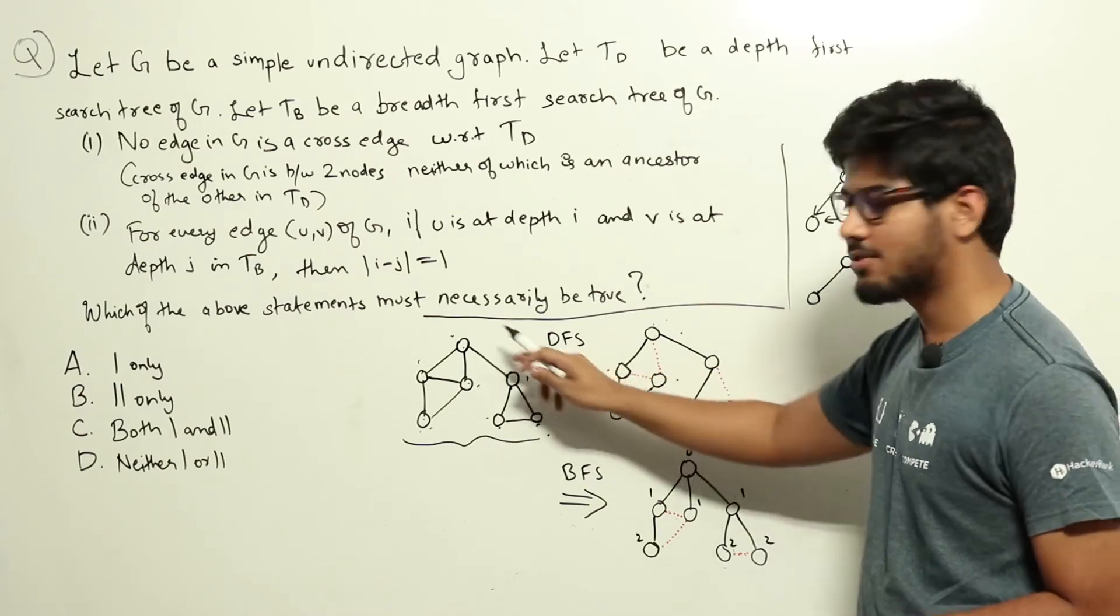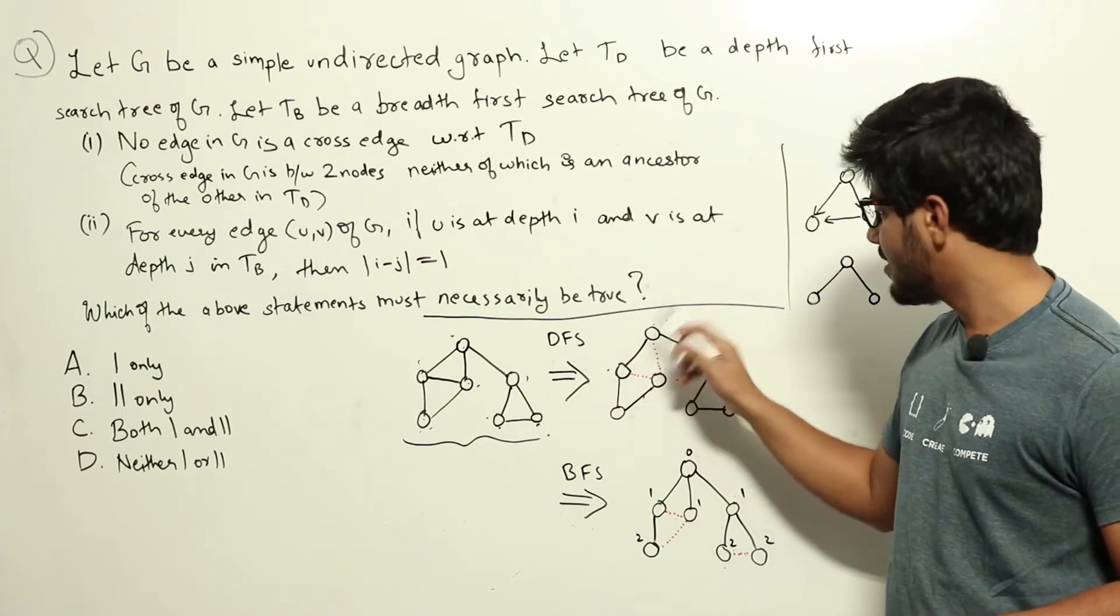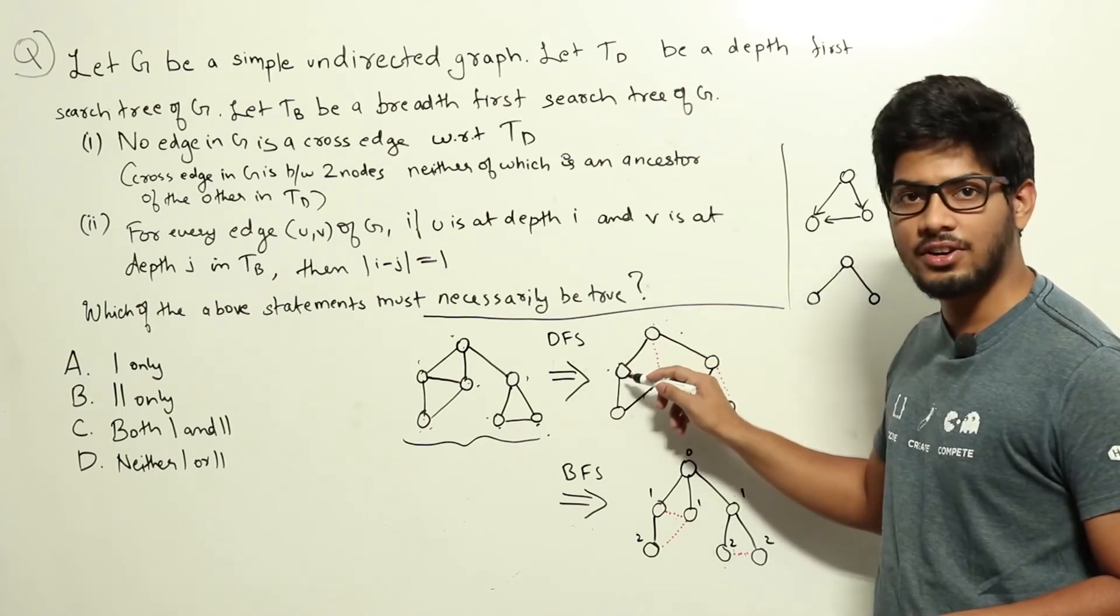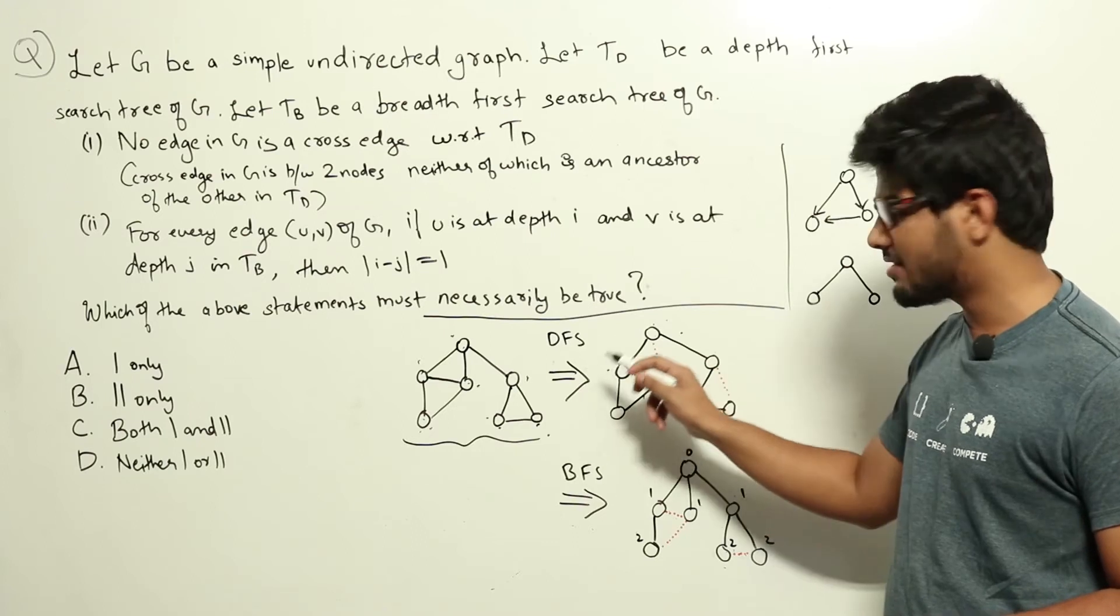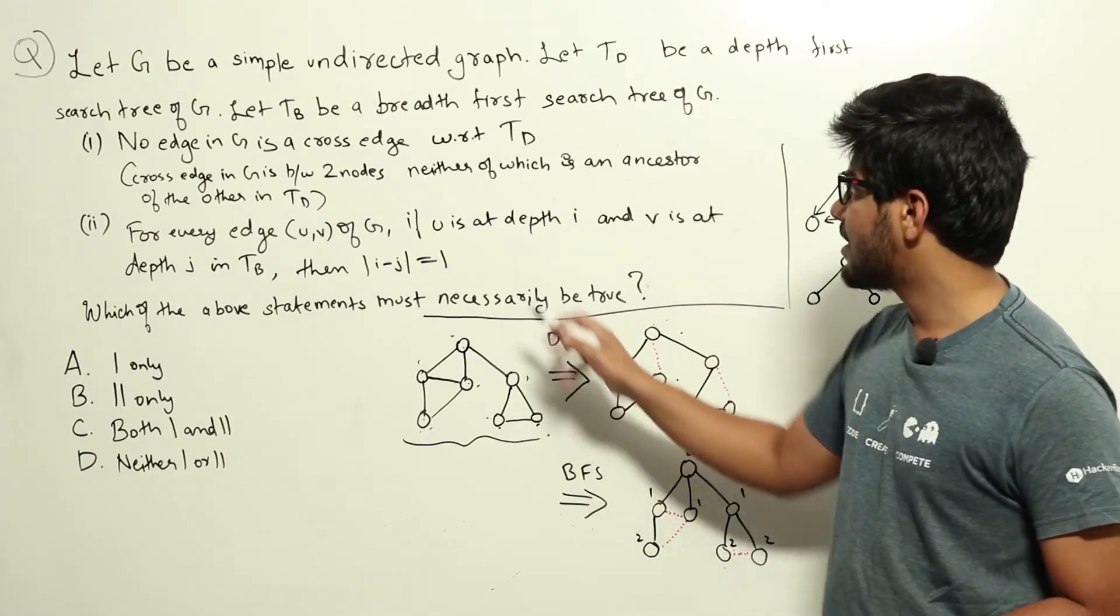At some point in the DFS tree we will reach one of these nodes, and then we will see this edge is there. So this edge will definitely be traversed in some way. So there is no way we can have a cross edge in an undirected graph.